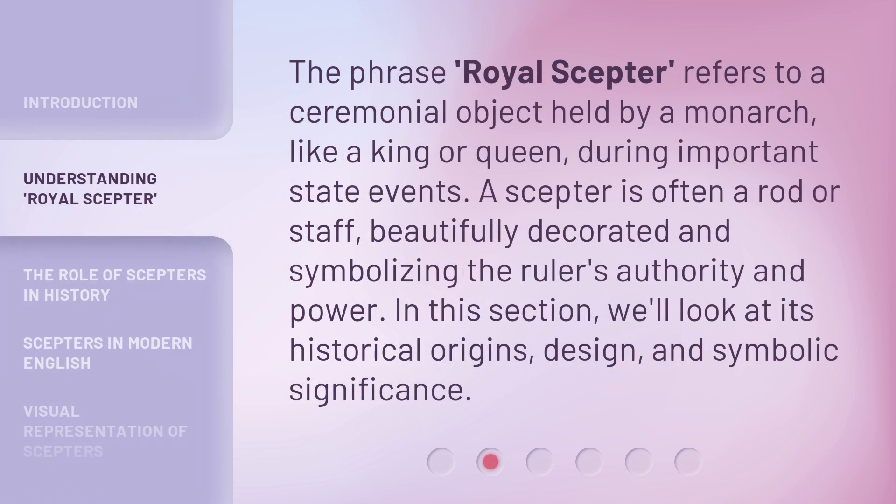The phrase 'Royal Scepter' refers to a ceremonial object held by a monarch, like a king or queen, during important state events. A scepter is often a rod or staff, beautifully decorated and symbolizing the ruler's authority and power. In this section, we'll look at its historical origins, design, and symbolic significance.